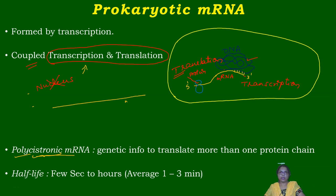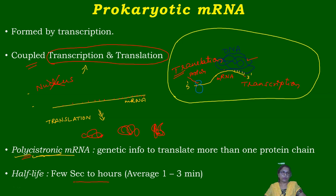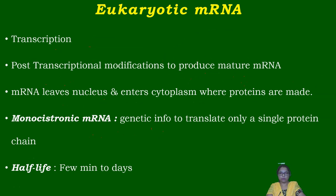Prokaryotic mRNA is also polycistronic. 'Poly' means many, and 'cistron' means coding regions. After the process of translation, a polycistronic mRNA produces more than one polypeptide chain — two, three, or many. This mRNA contains information for the synthesis of more than one polypeptide chain, which is why it is called polycistronic mRNA. The half-life of prokaryotic mRNA is only a few seconds to a few hours, with an average of one to three minutes.